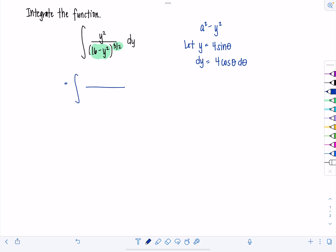Now in the numerator, instead of y squared, I'm going to have four sine theta squared. That's going to make it 16 sine squared theta. And then in the denominator, we'll have 16 minus, again, y squared is 16 sine squared theta. This is raised to the three halves. And instead of dy, what do we have? Yes, four cosine theta d theta.